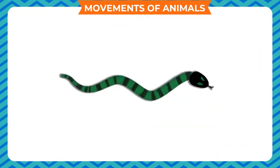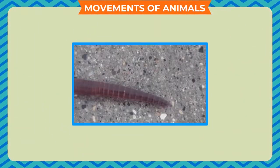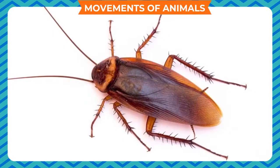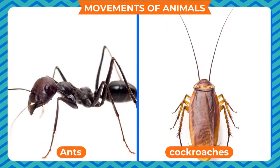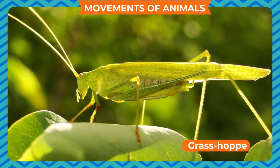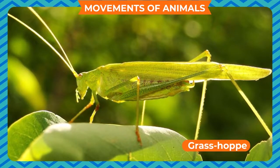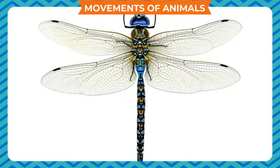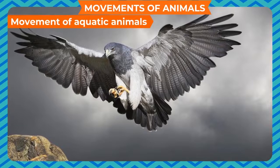Snakes are reptiles that have no legs. A snake has scales or plates on the underside of its body that help it to move. Earthworms move by contracting and extending their bodies. Insects have six legs — ants and cockroaches walk with their legs, while some insects such as the grasshopper hop with the help of their strong hind limbs. Some insects can even fly using wings made up of tiny scales, moved by chest muscles.